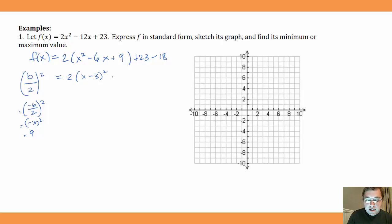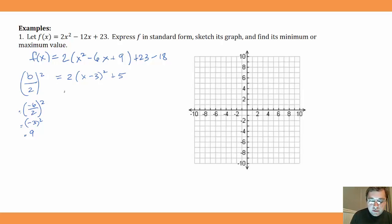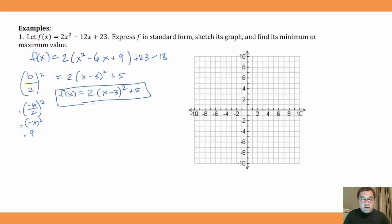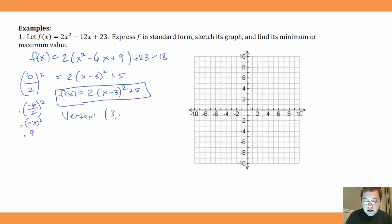Adding 23 and -18 gives +5 on the outside. So our function f(x) in standard form is 2(x - 3)² + 5. From standard form we can immediately pick out the vertex: the number in parentheses takes the opposite sign, so the vertex is (3, 5) — positive 3 and positive 5.